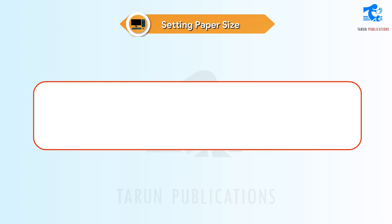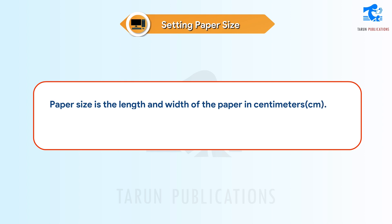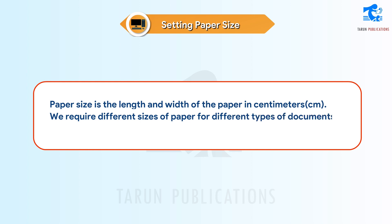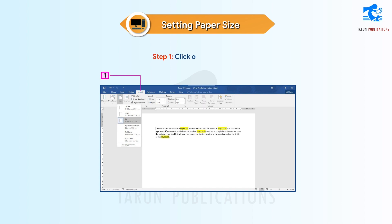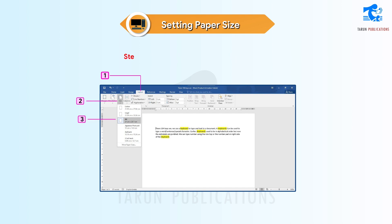Setting Paper Size. Paper size is the length and width of the paper in centimeters (cm). We require different sizes of paper for different types of documents. A4 is the default paper size in Word 2016. Follow these steps to change the paper size in Word. Step 1: Click on the Layout tab. Step 2: Click on the Size command in the Page Setup group. Step 3: Select a paper size for your document. A4 is the standard paper size.